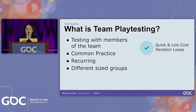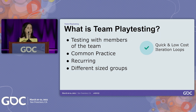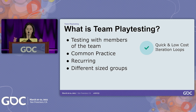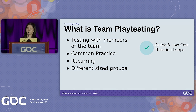Team playtesting has a really key strength: it gives you quicker and lower-cost iteration loops. This is for a few factors. One is that it overall has less logistics — you don't have to recruit external participants and plan extra studies. Developers already have access to dev builds that are easier to create and access. And it's not just quicker to implement your design for the first time — it's also quicker to act on feedback and implement changes, because of those logistics and the lower quality bar needed for dev team builds.